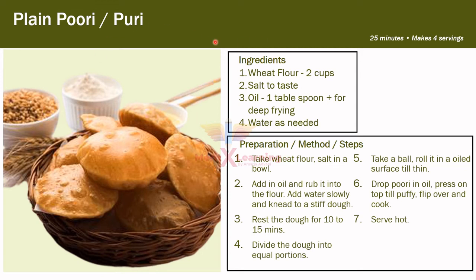So this is the basic method of writing a recipe. Let us have a recap: on the top we write the name of the food dish, then we mention the total time required and the servings, then comes the list of ingredients, and finally the preparation — the method to make the food dish.